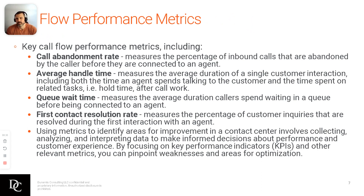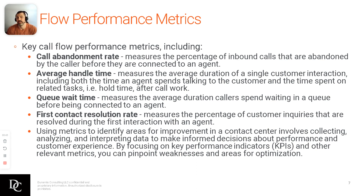Call flow performance metrics — there are four of the most common ones. Call abandonment rate measures the percentage of inbound calls abandoned by the caller before they're connected to an agent. So if you have 10 calls come in and six have been abandoned or disconnected and four made it to an agent, that's not a good rate, but it gives you an idea of what's happening and you'll be able to look into those interactions a bit deeper.